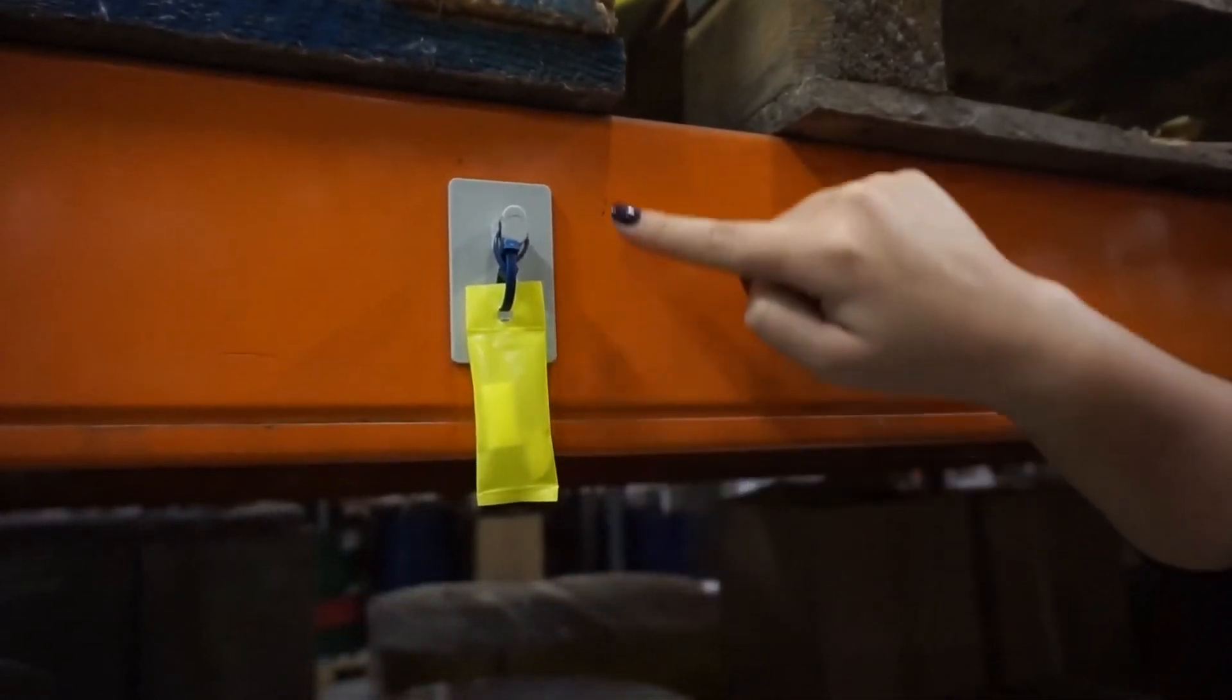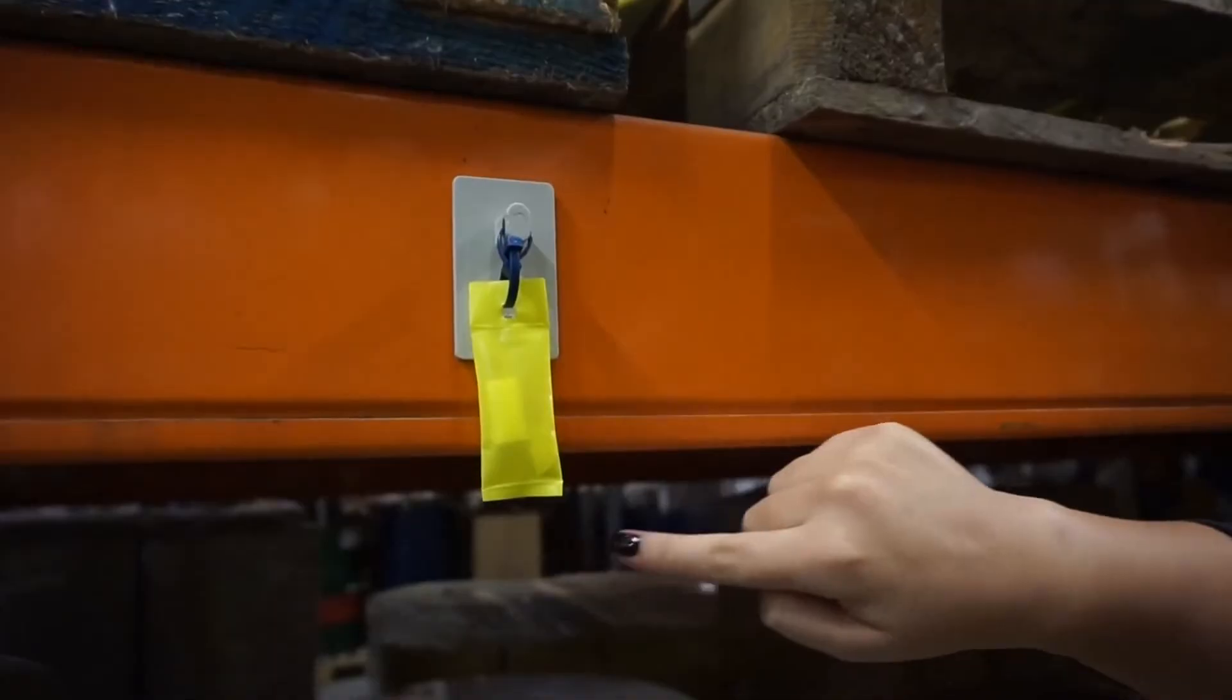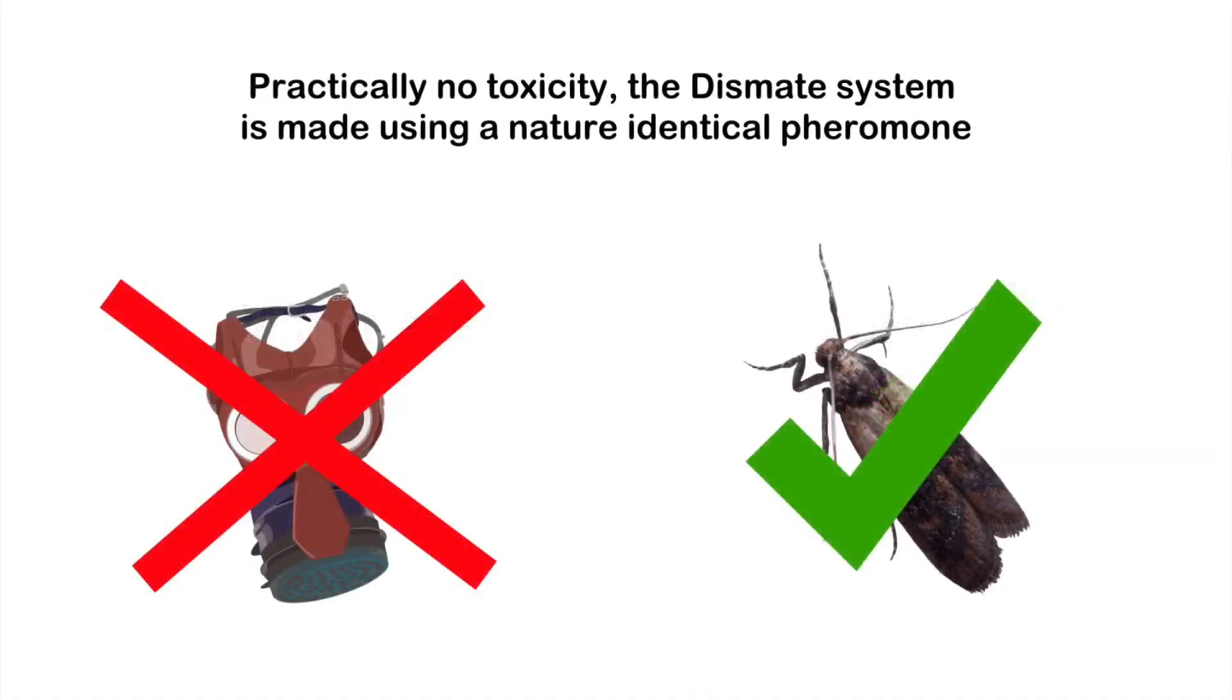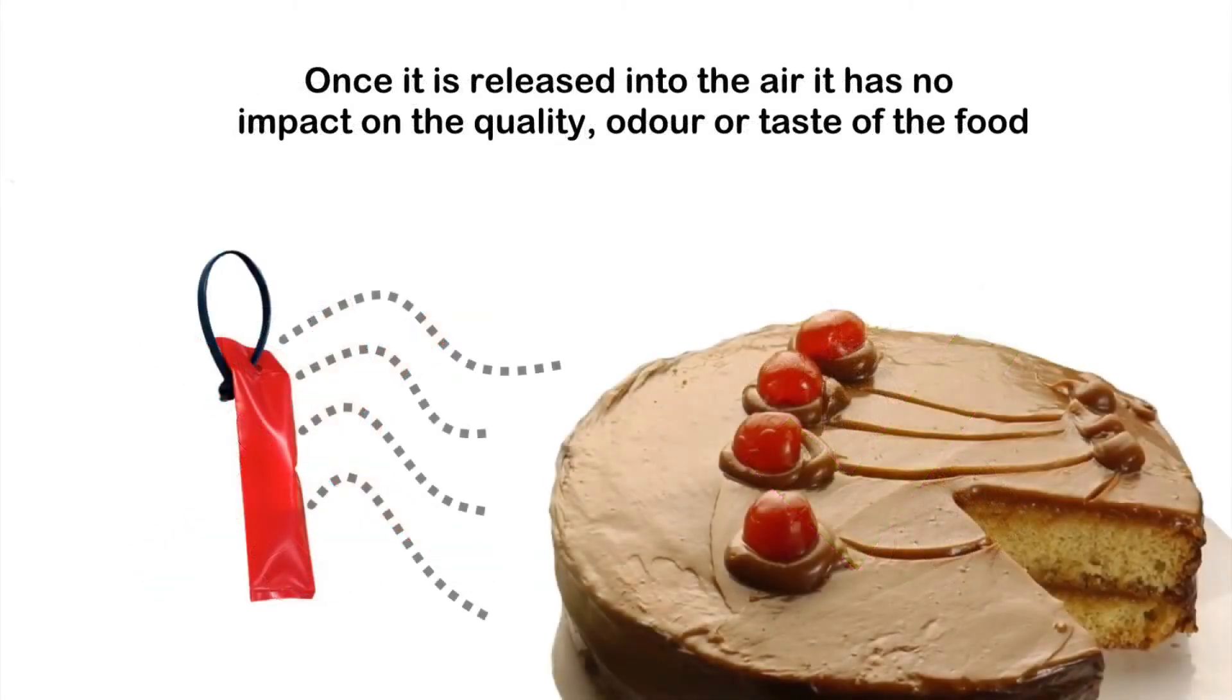What are the advantages? Practically no toxicity. The Dismate pheromone is made using natural products used by insects. Once it is released into the air, it has no impact on the quality, odor, or taste of the food product.